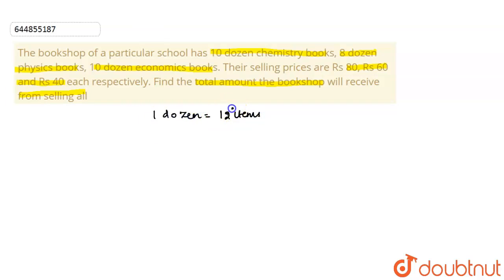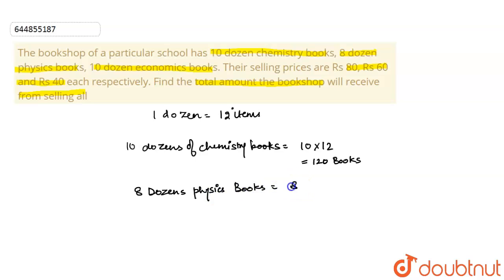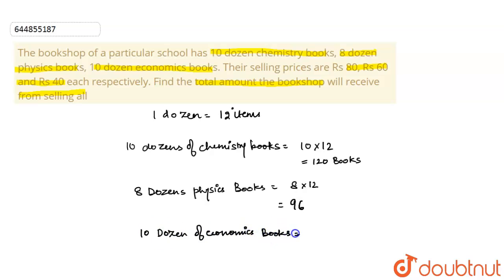There are 10 dozens of chemistry books, so the number of chemistry books is 10 into 12, which is 120 books. Then 8 dozens of physics books, which is 8 into 12, which is 96. And there are 10 dozen economics books, so 10 into 12, which is 120 books.